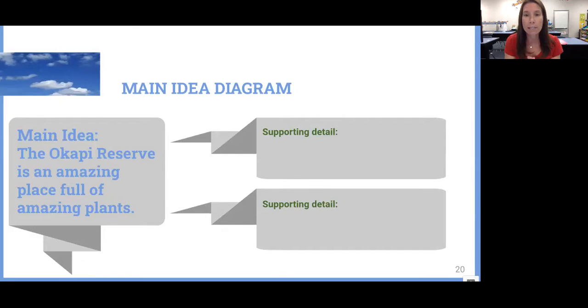I'll open up my book again. I'll go back into the story and re-read if I can't remember something. We read the story yesterday. So what I want you to do is get your book out and look for some supporting details. Okay, so the main idea I already gave you. The main idea is the Okapi Reserve is an amazing place full of amazing plants.